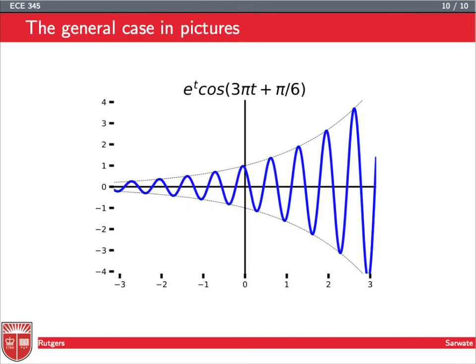All right, so, here's e to the t. So, here we have an increasing exponential, and this cosine 3 pi t plus pi over 6. And you can see what happens is exactly this. You draw e to the t, and you draw minus e to the t, and then you say, okay, the cosine is bouncing up between plus 1 and minus 1, so it's hitting the upper and lower boundaries of these exponentials as we go along.